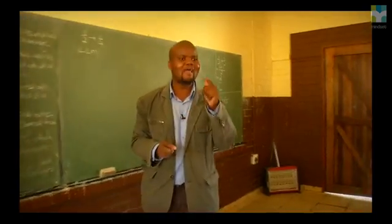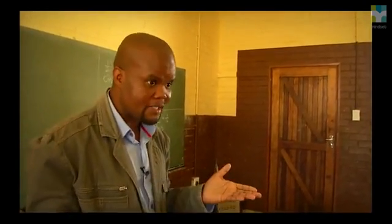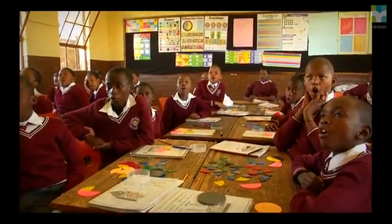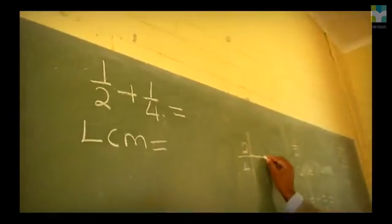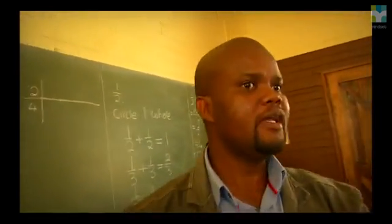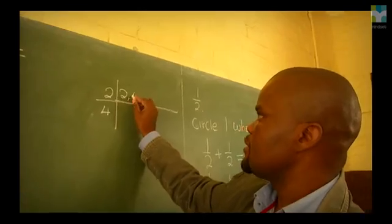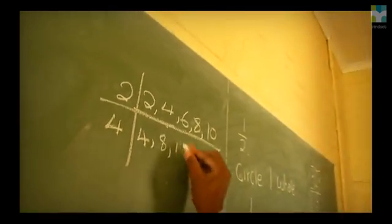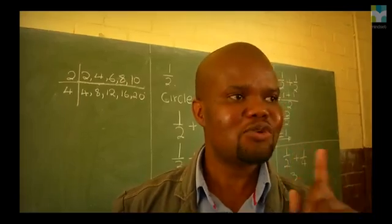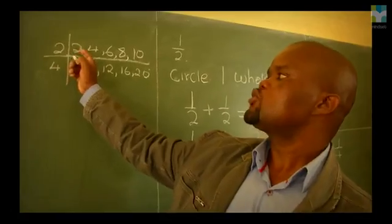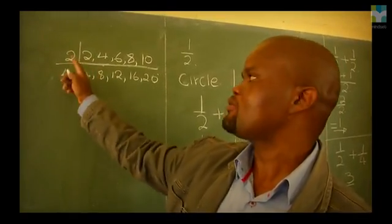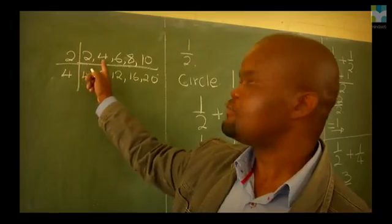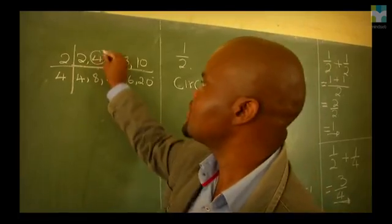Tell me, what does LCM stand for? It stands for lowest common multiple. The lowest common multiple of two and four. You write two and write four. So the multiples of two: 2, 4, 6, 8. And then the multiples of four: 4, 8, 12. What are we looking for? The lowest number that appears in both. Is two the lowest common multiple of two and four? And then four? Yes — four is the lowest and common.